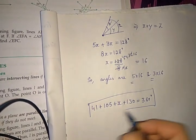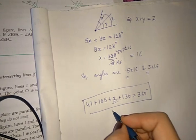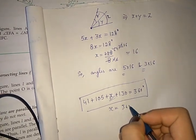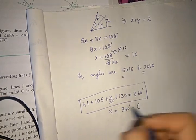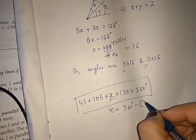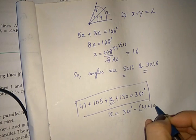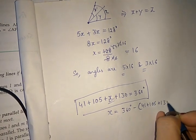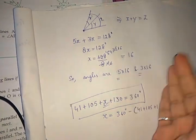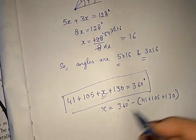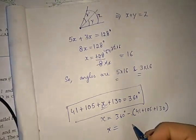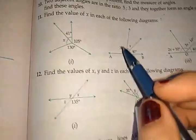You can solve this expression to find the value of x: x equals 360 minus (41 plus 105 plus 130). First add all the known angles and then move them to the right side. That will give you the value of x.